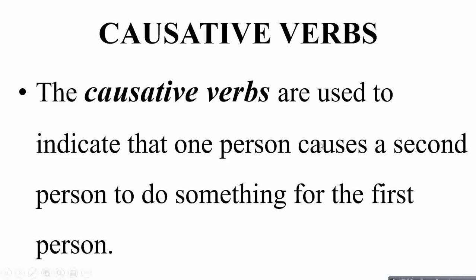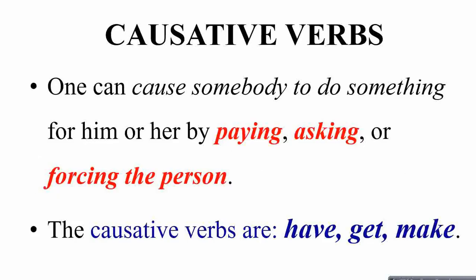If there are two people in a sentence, the first person causes the second person to get something done for the first one. We use verbs to show that services are done — this is shown by causative verbs. One can cause somebody to do something either by paying, by asking, or by forcing the person.